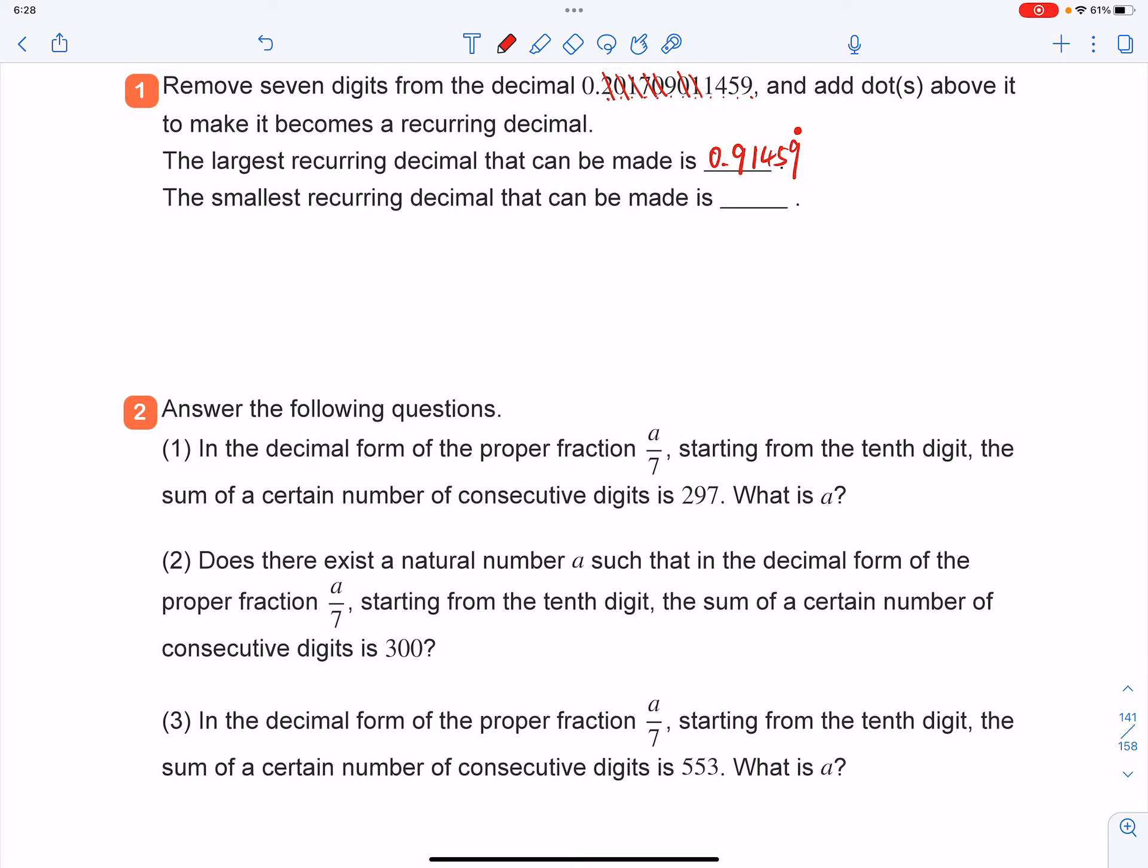And let's see, how can I get the smallest, right? If you want to get the smallest, still you have to remove seven digits, right? And if you want to get the number as small as possible, you can remain as many zeros as you have.